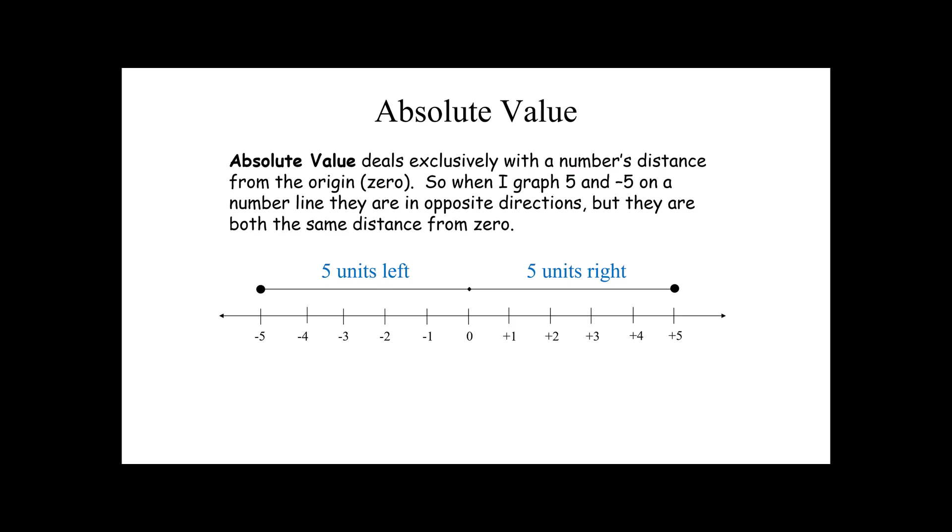Let's talk about absolute value for just a minute. Absolute value deals exclusively with a number's distance from the origin or zero. So when I graph 5 and negative 5 on a number line, they are in opposite directions, but they are both the exact same distance from zero. The absolute value of 5 is 5, the absolute value of negative 5 is 5.